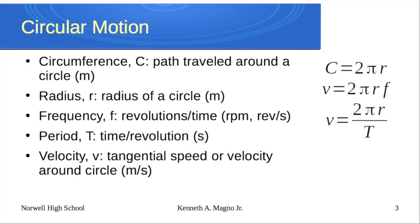To understand what's going on here, we need to talk about some terms. First is circumference — that's the path traveled around the circle, equal to 2πr. Then two new terms: frequency and period. Frequency is the revolutions per time or cycles per time. Period is the time per revolution or time per cycle. Frequencies are in RPM or revs per second; periods are in seconds.